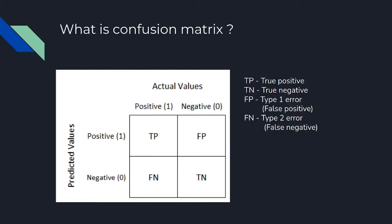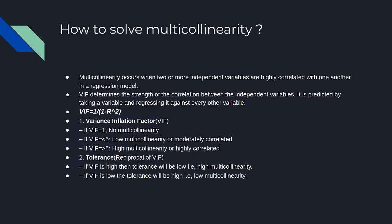Next question: what is a confusion matrix? A confusion matrix is a technique by which we find out how good our classification models are. We have terms like true positive, true negative, false positive, and false negative. When your model predicts positive and the actual value is also positive, it's a true positive. When both are negative, it's a true negative. When your model predicts positive but the actual is negative, that is a false positive — also called Type 1 error. When your model predicts negative but the actual is positive, that is a false negative — also called Type 2 error.